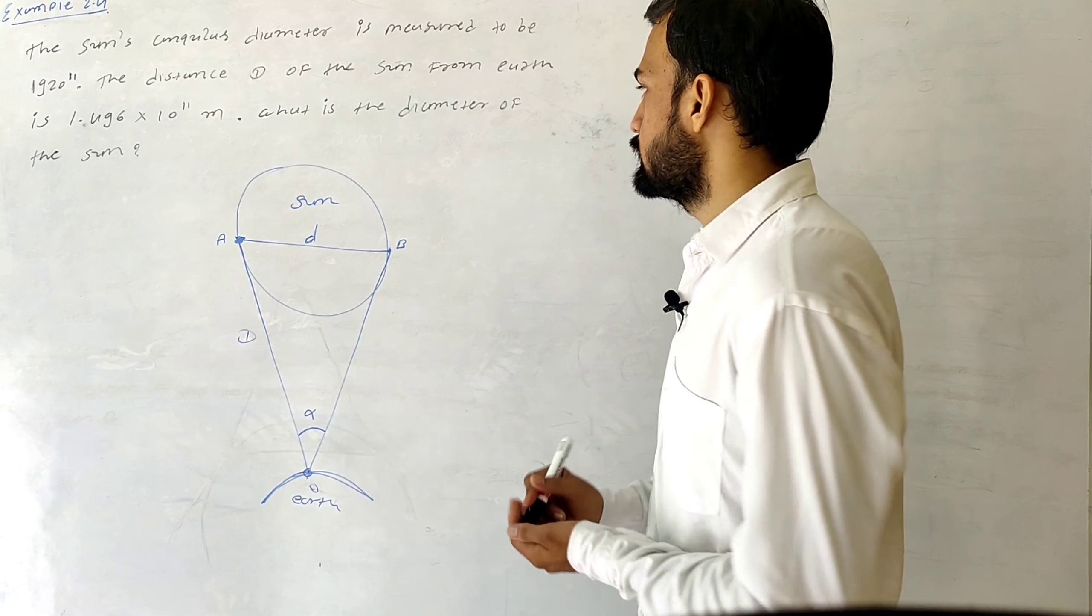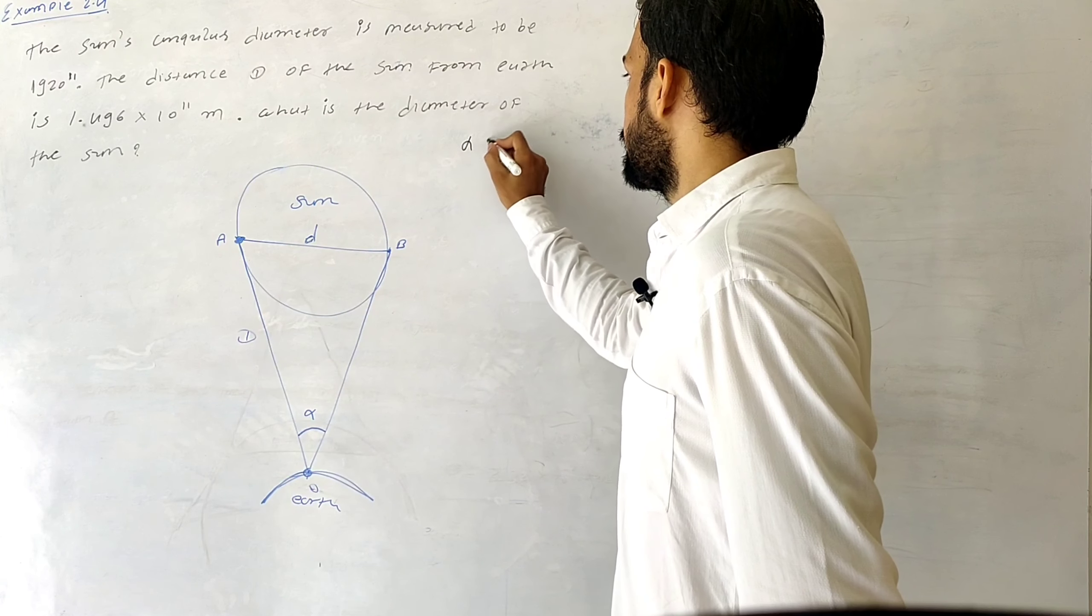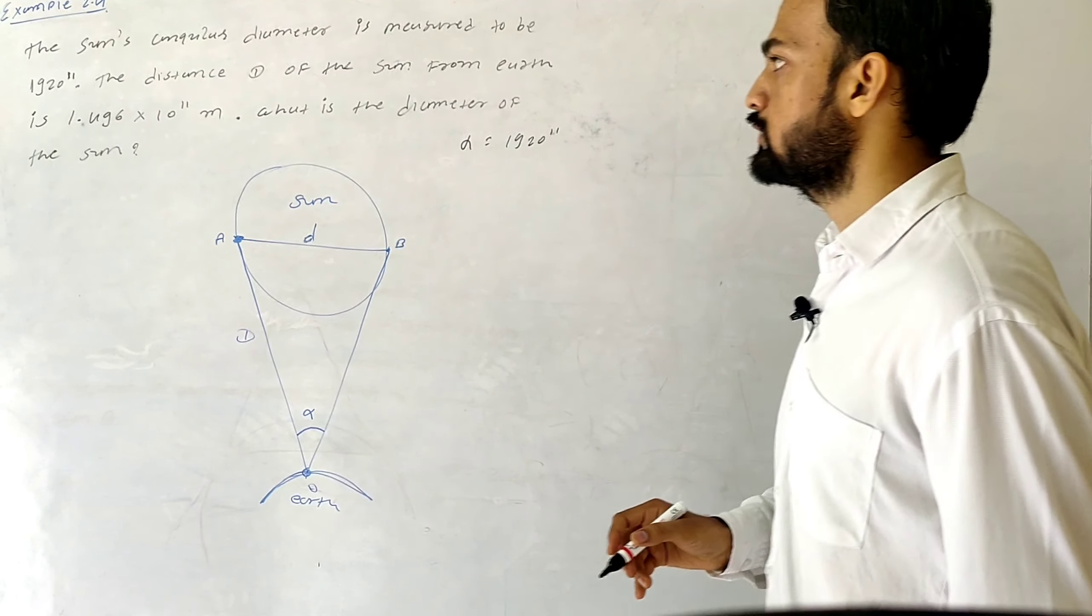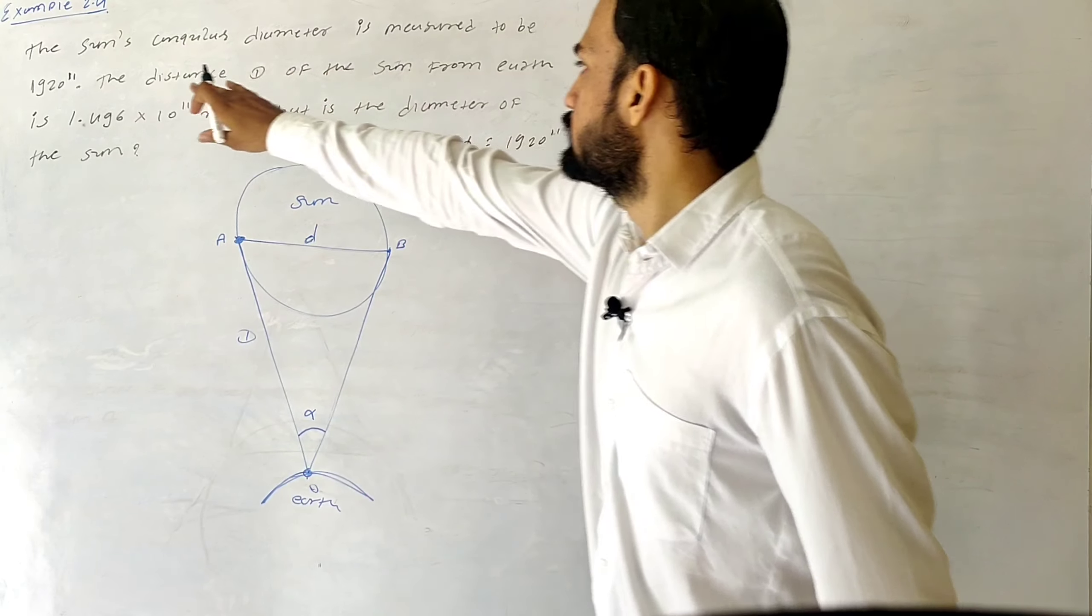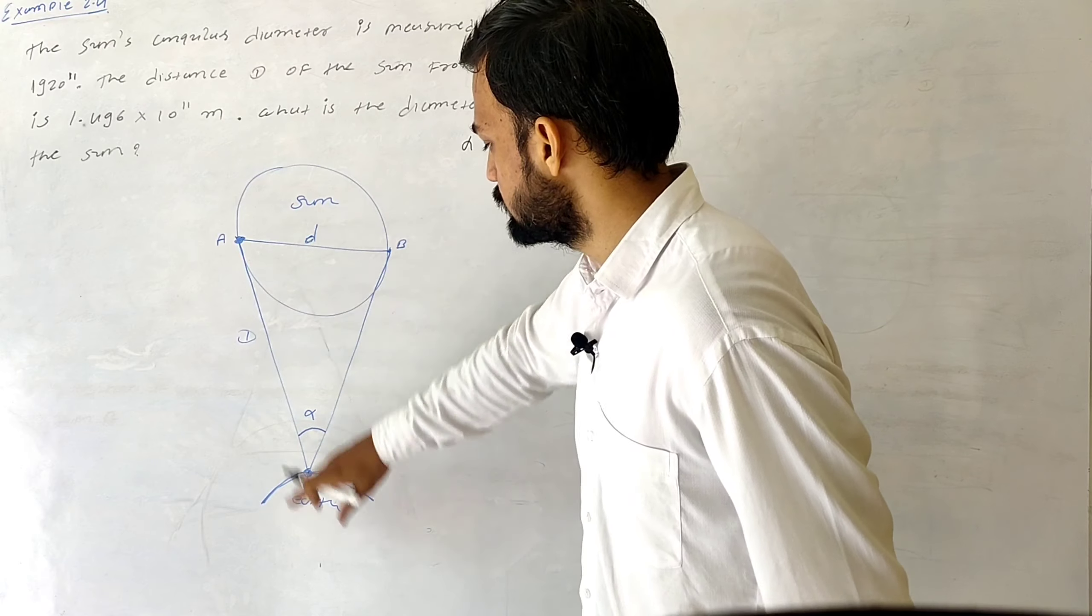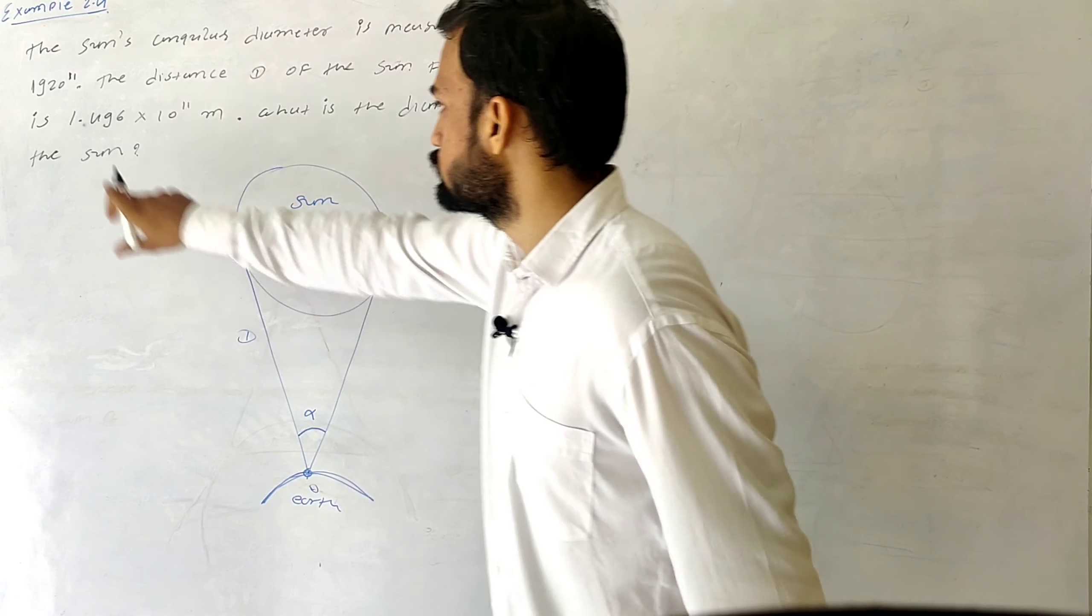So here I can write alpha is equal to 1920 seconds. And this is the distance of the sun from Earth, capital D, which is 1.496 × 10^11 meters.